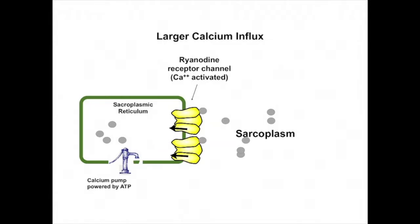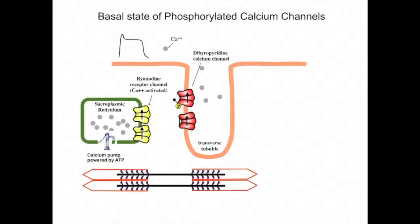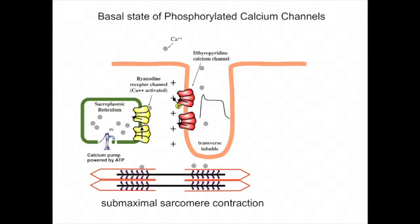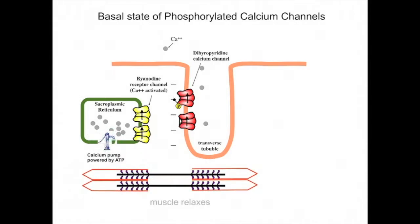Now let's put the entire picture together. There is a basal number of phosphorylated calcium channels — only two are shown. One is unavailable because it is not phosphorylated, while the other is phosphorylated and available. A cardiac action potential then sweeps down the transverse tubule and opens the available calcium channel. The small influx of calcium then opens one of the ryanodine receptors, causing a small amount of calcium to flow into the sarcoplasm and initiating sarcomere shortening. Notice that the sarcomeres do not undergo maximal shortening because of the relatively small amount of calcium. A moment later, the cell repolarizes, closing the calcium channels, and the calcium in the sarcoplasm is pumped back into the sarcoplasmic reticulum and the muscle relaxes.